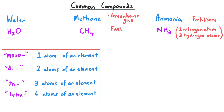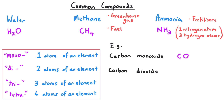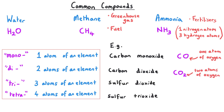Another naming convention used in compounds made from just non-metals is the use of prefixes mono-, di-, and tri-. For instance, carbon monoxide has one carbon and one oxygen, whereas the 'di' in carbon dioxide means two oxygens for one carbon. We also have sulfur dioxide and sulfur trioxide, where 'di' and 'tri' mean that sulfur is bonded with two oxygens in the first compound but three oxygens in the second.